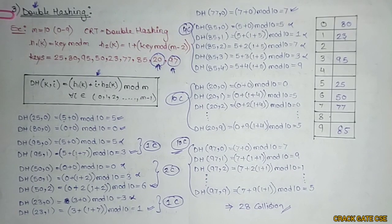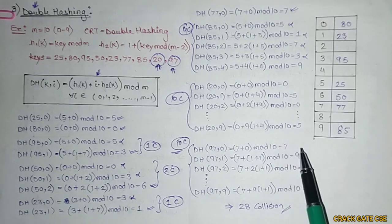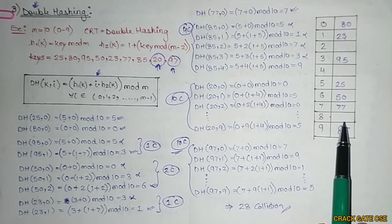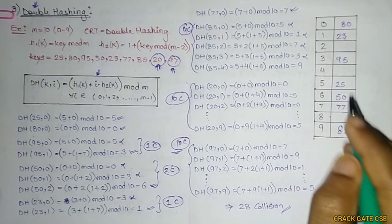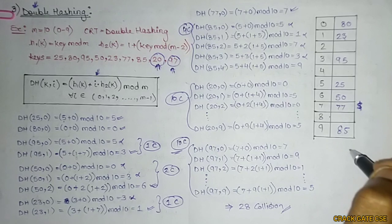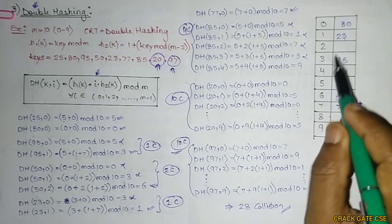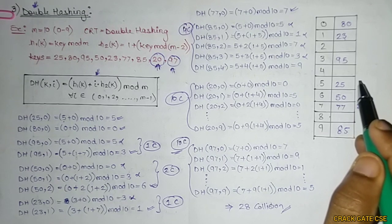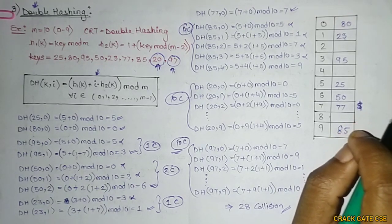In double hashing, probing is based on hash functions. We are not wasting space outside in the form of linked lists as in chaining. Searching, insertion, and deletion time is O(n) in the worst case. When deleting a key value, we use a special symbol like a dollar sign. If there are too many such special symbols in the table, we can rehash it to maintain search efficiency.